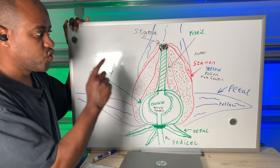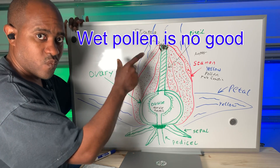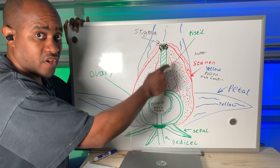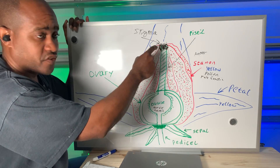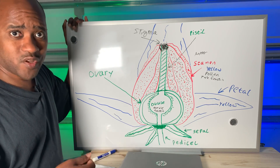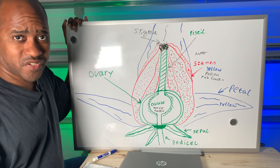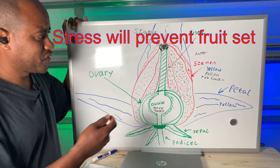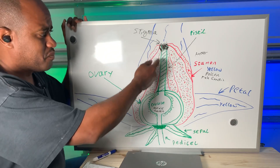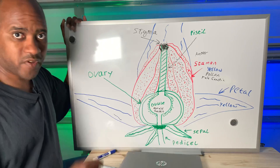Humidity is another factor. Too much humidity and the pollen inside of the stamen will not let go — it will stay attached to the stamen or the anthers and will not pollinate the stigma to be able to form the fruit. It could also be that the plants are not being watered enough. If it's very dry, the pollen itself is going to dry out, and dry pollen is unusable for the flower, so the plant will drop the flower.